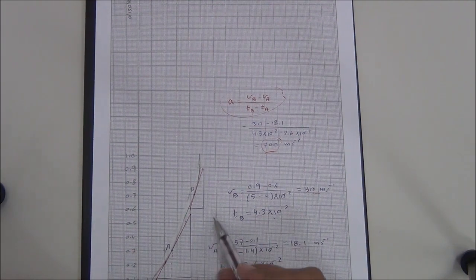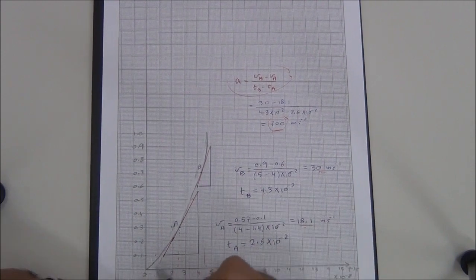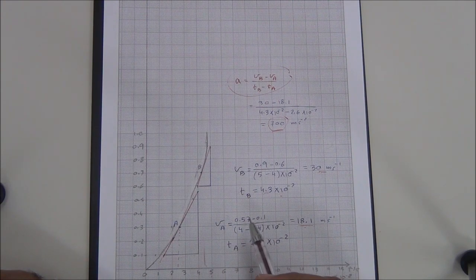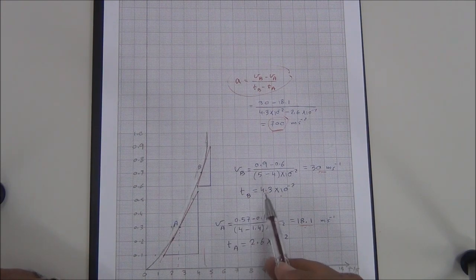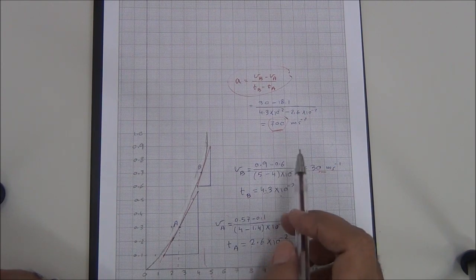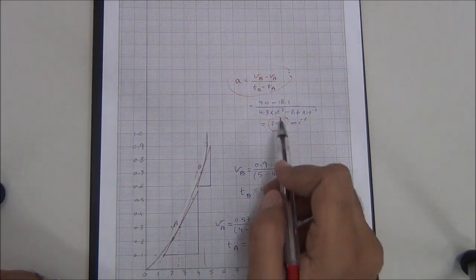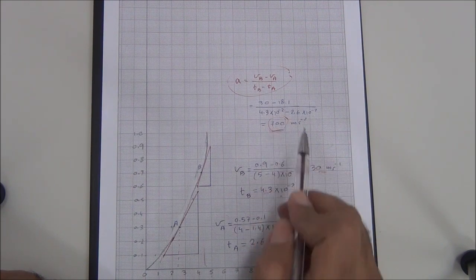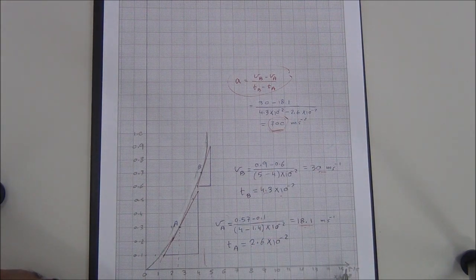The acceleration value is very large. This is due to several sources of error: the curve drawing, inaccurate distance measurements, and friction force that is not constant throughout the motion. These errors cause the large acceleration value. I hope you understand this experiment — thank you.